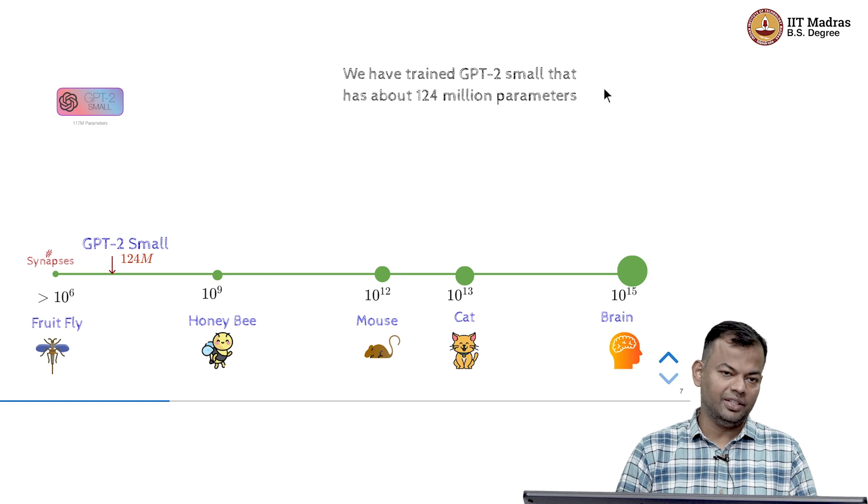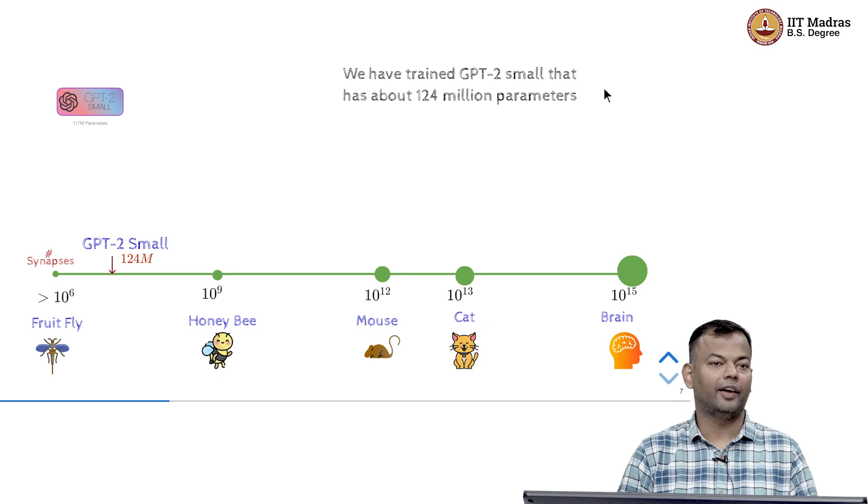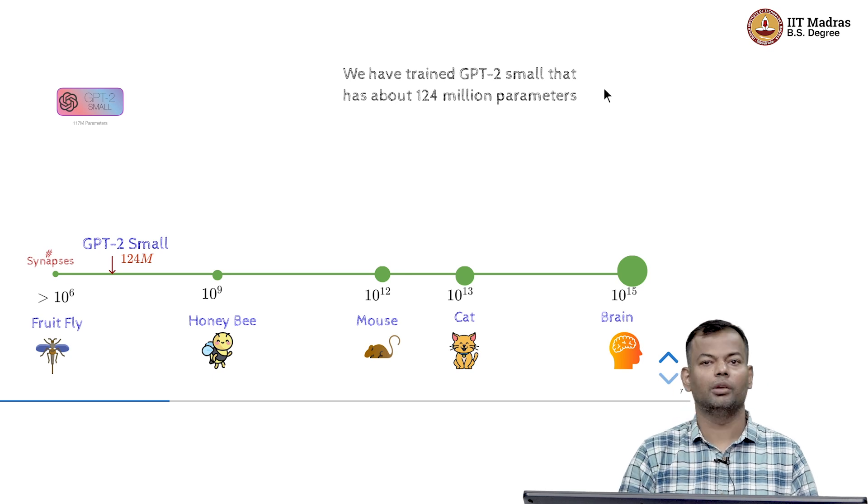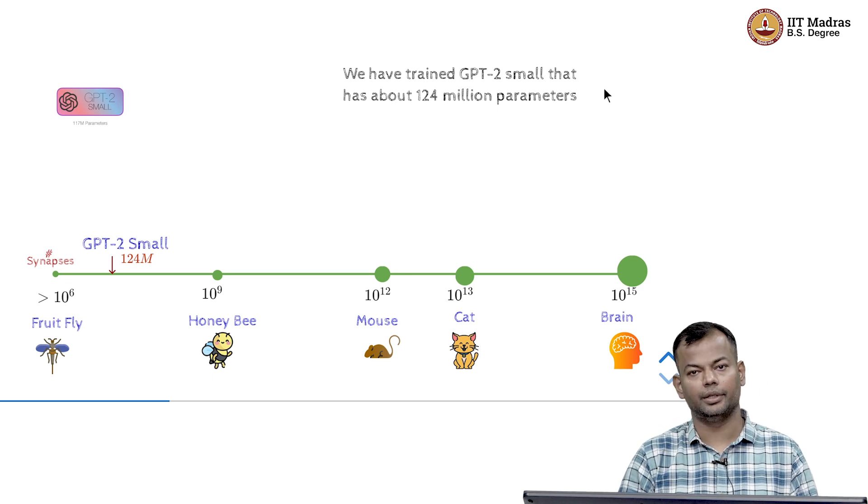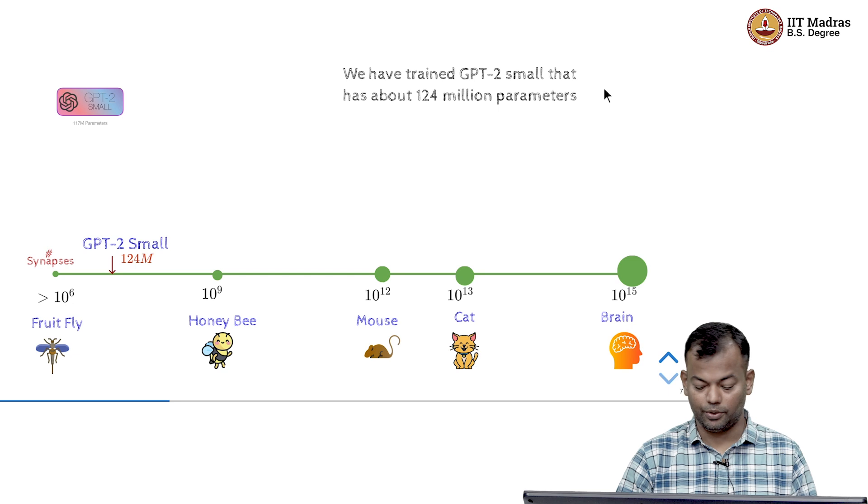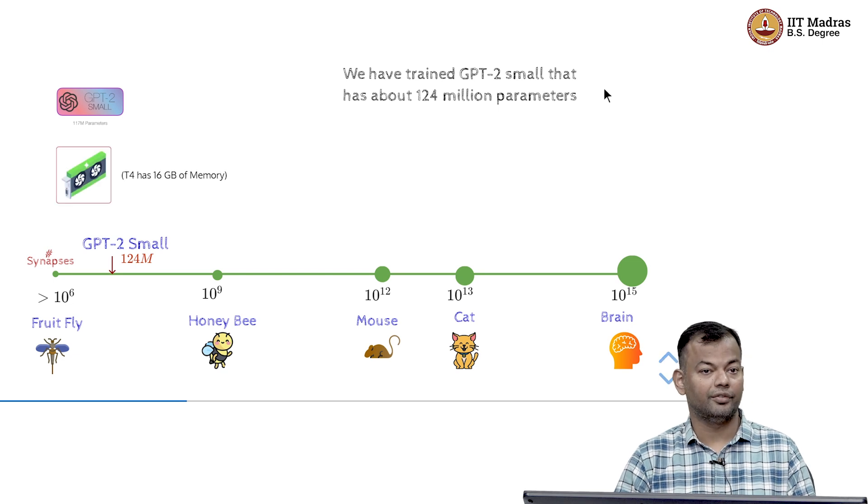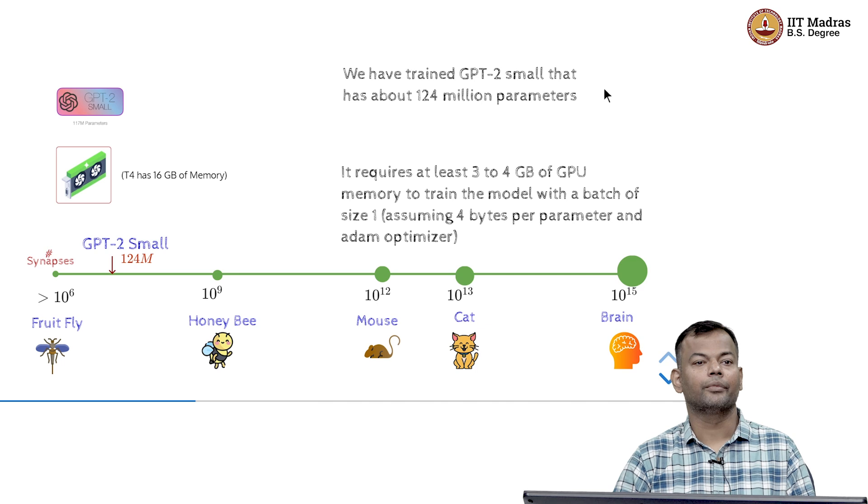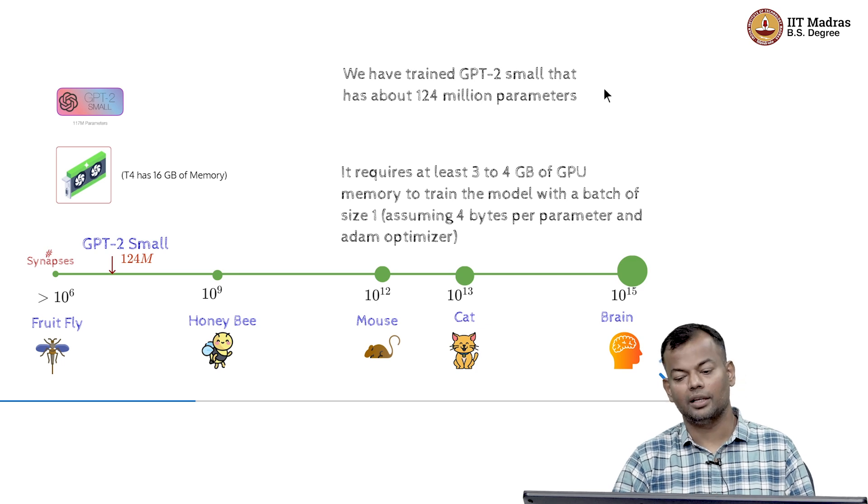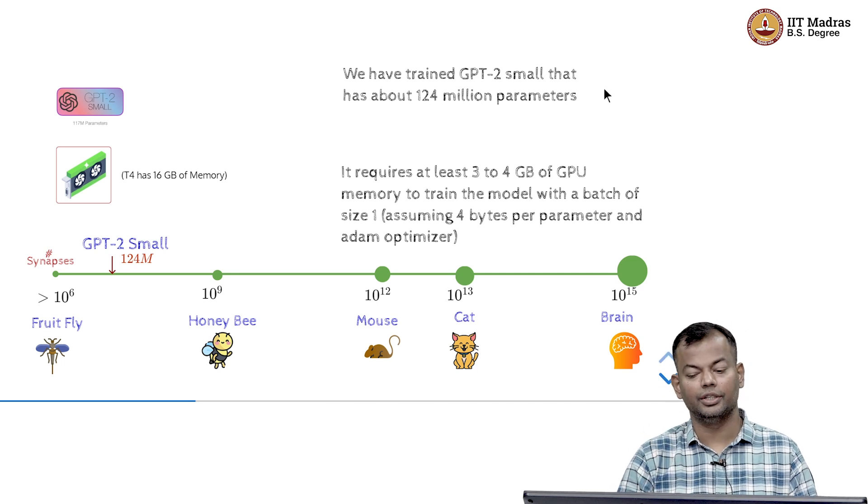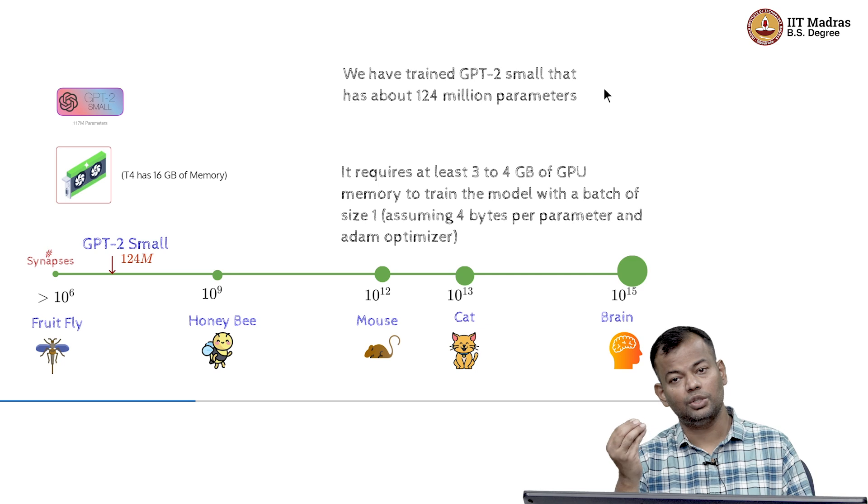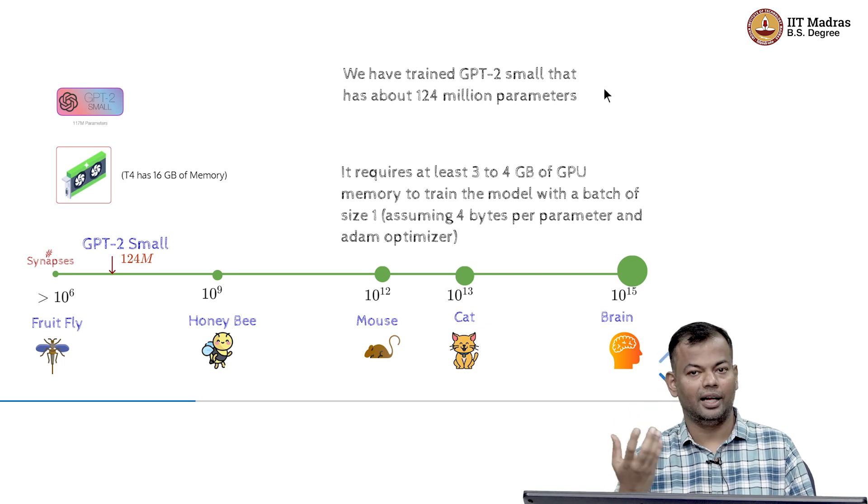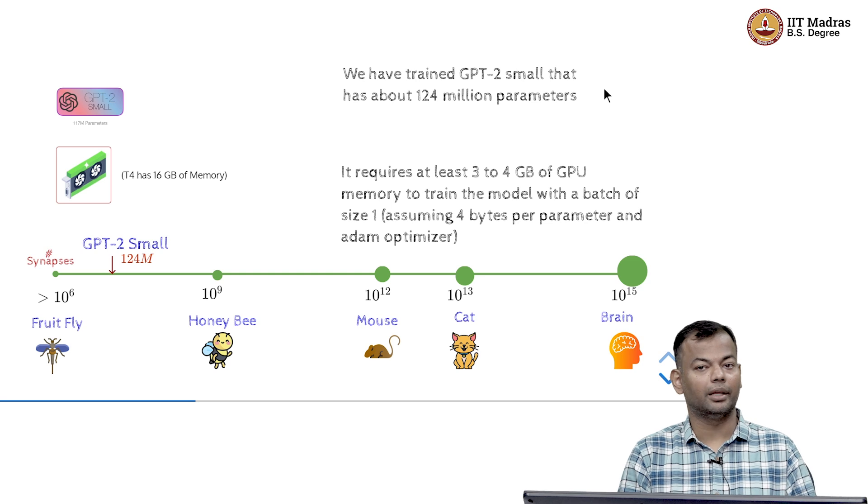So, this is fine and you might want to fully fine tune a model which you have pre-trained and this makes sense for like smaller models like 124 million parameter GPT-2 model. Even the GPT-2 model, a small model requires around 3 to 4 GB of GPU memory, and that too just with a batch size of 1. Typically you would use larger batch sizes and anything larger than 10 here would become prohibitive.